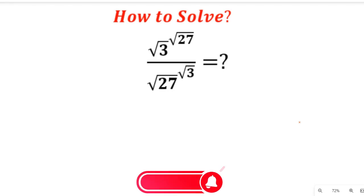How to solve: square root of 3 to the power of square root of 27, divided by square root of 27 to the power of square root of 3. If you are new here,